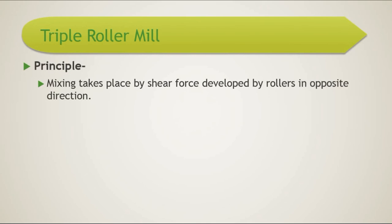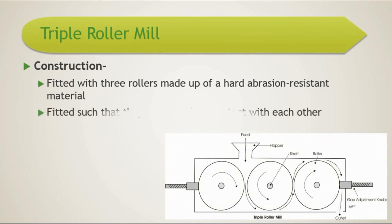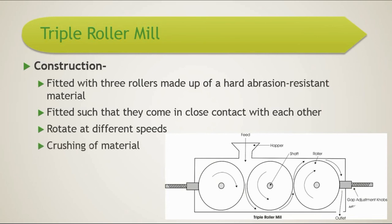The next mixer to discuss is the triple roller mill. In the triple roller mill, mixing takes place by shear forces developed by rollers rotating in opposite directions. It is fitted with three rollers composed of hard, abrasion-resistant material. They are fitted in close contact with each other and rotate at different speeds. The material that comes between the rollers is crushed and reduced in particle size.